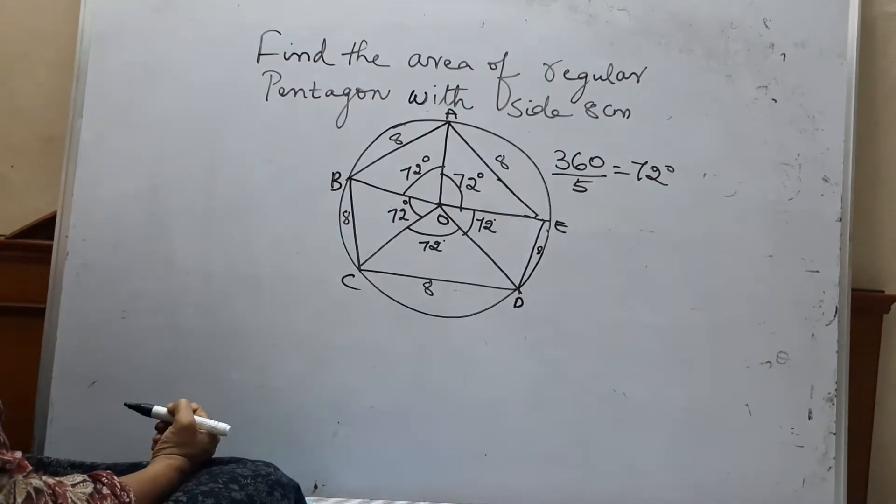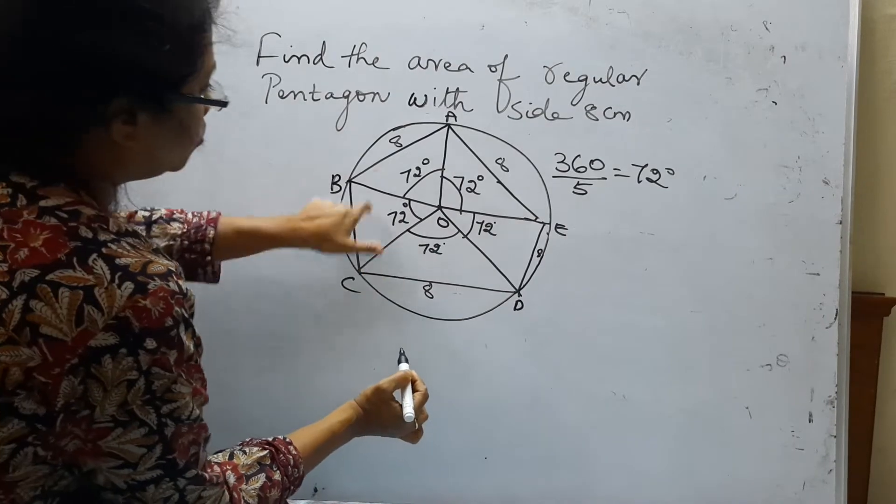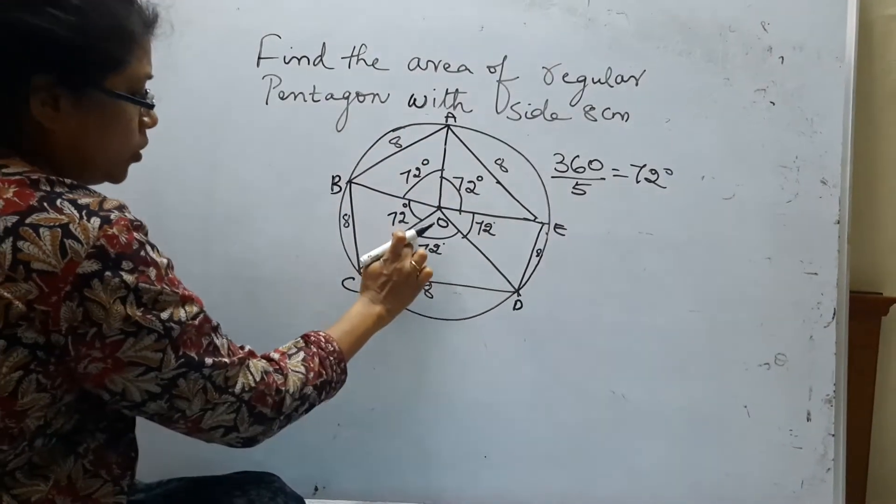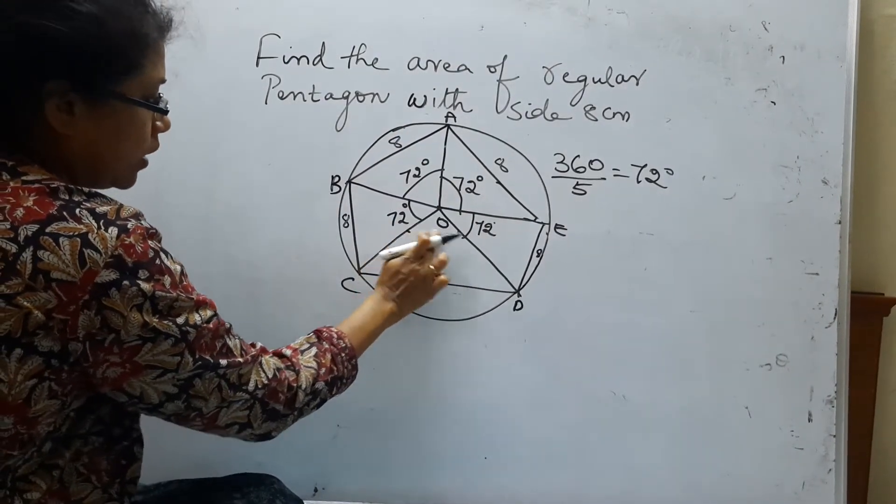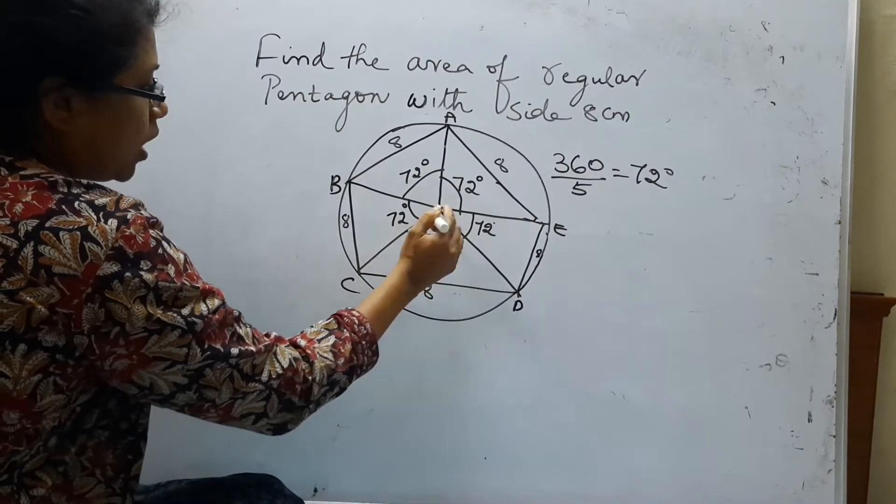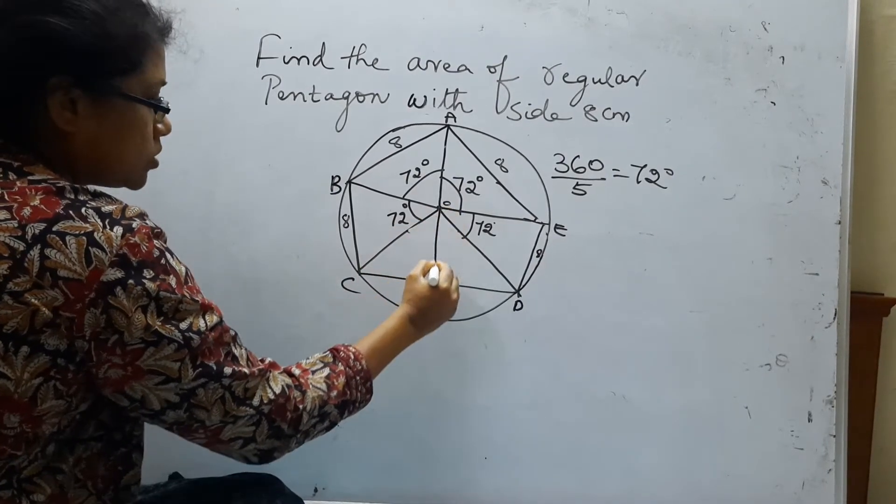So what am I going to do? I will take this triangle. I have 5 triangles: 1, 2, 3, 4, 5. So I am going to take this triangle. And what would I do? I would draw an altitude.